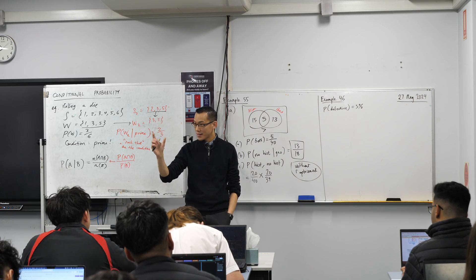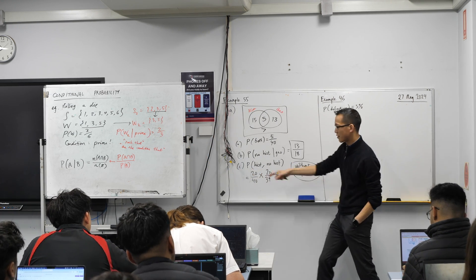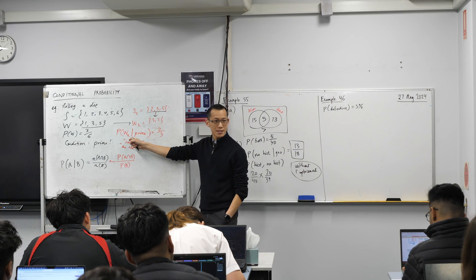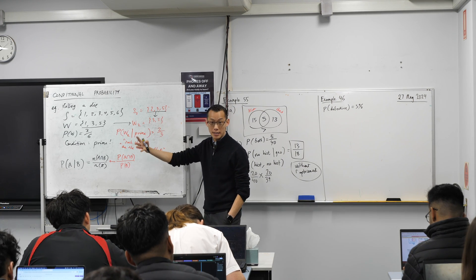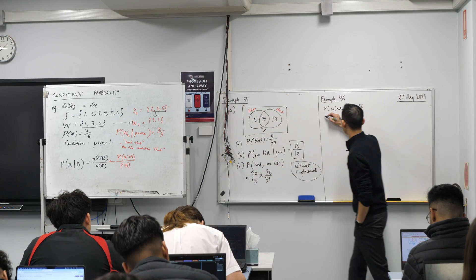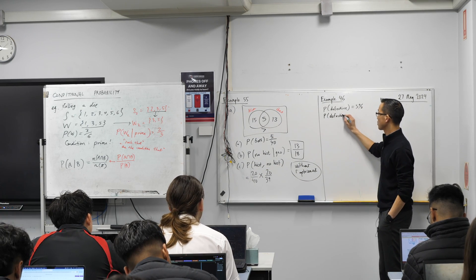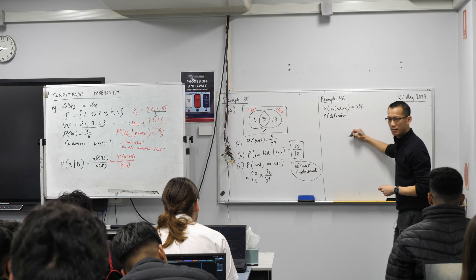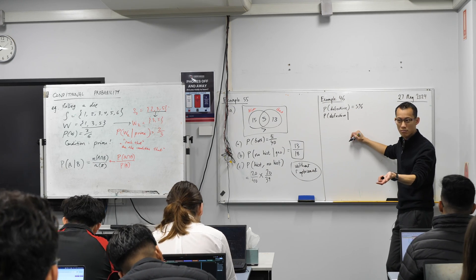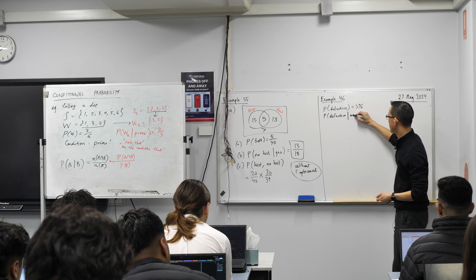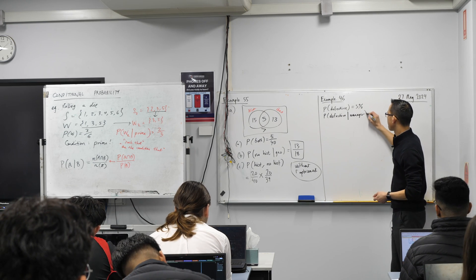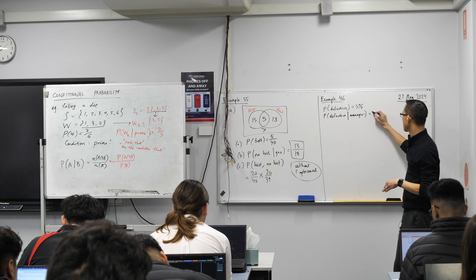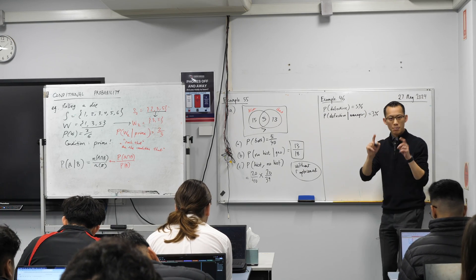And then it says the probability reduces to 3% when the manager is working. Now that word when is a bit like it's over here. It's this, right? I know this. This is a condition. So the probability of it being defective, still the same favorable event, when on the condition that, we just call it manager. It reduces down to 3%.